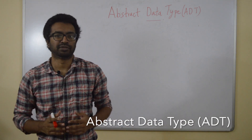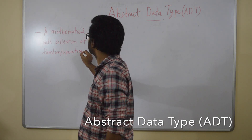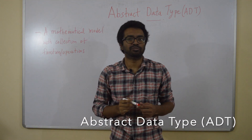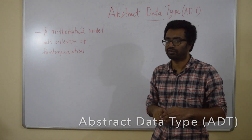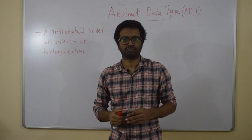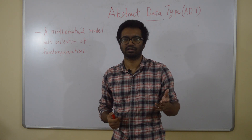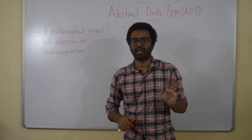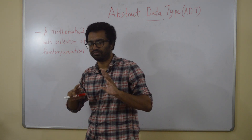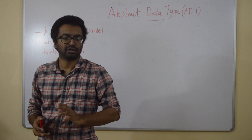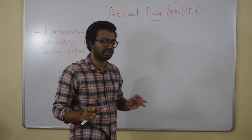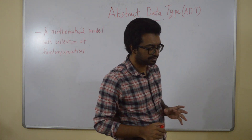Abstract data types. It's a mathematical object with a collection of functions or operators. Did you understand? I guess not. So we'll see a few examples to try to understand this concept.